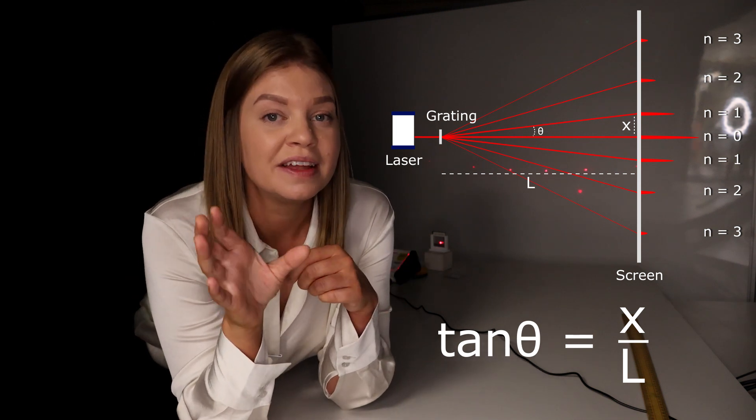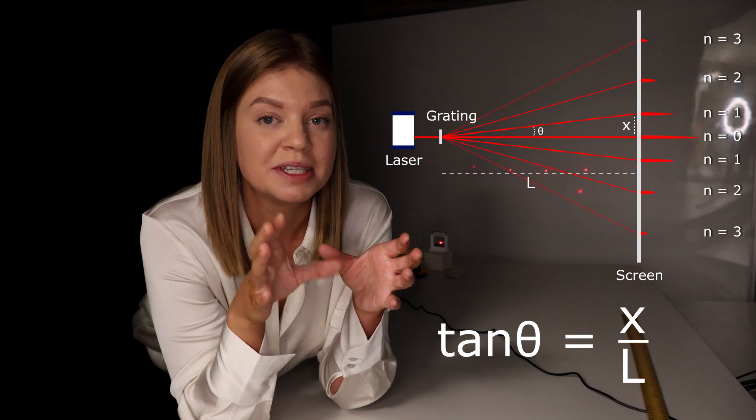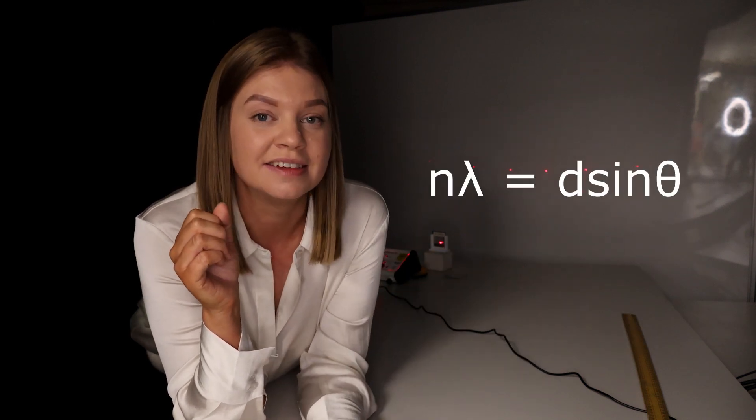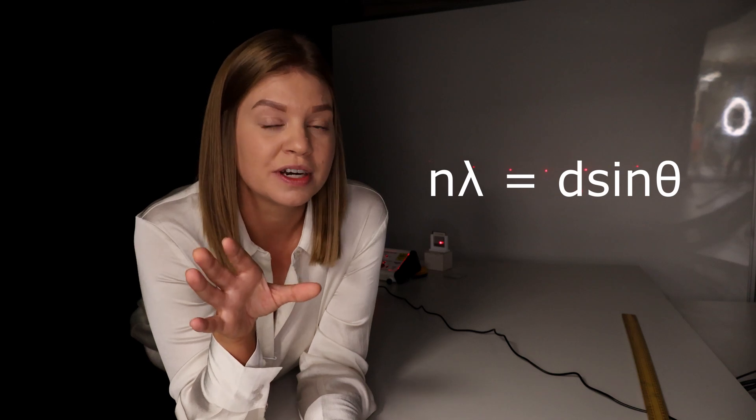L is the distance from the grating to the screen, and then if we divide those values and take the inverse tan, we can then use our value for theta to substitute into the grating equation, which is n lambda equals d sine theta, where n is the order of the diffraction maximum.